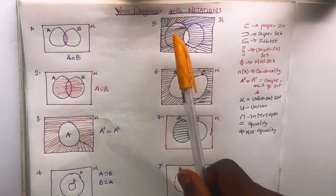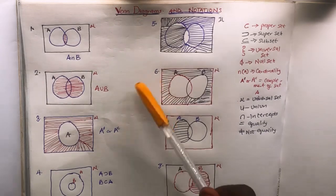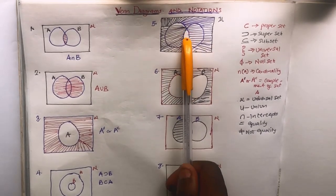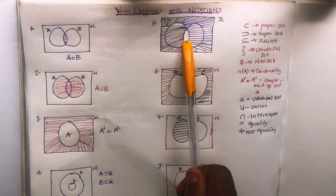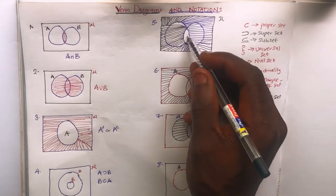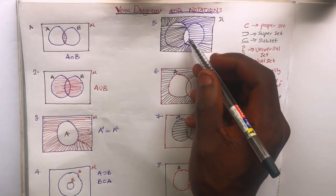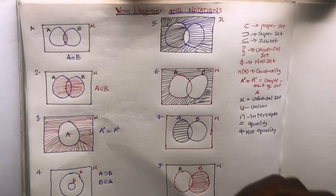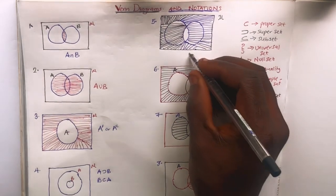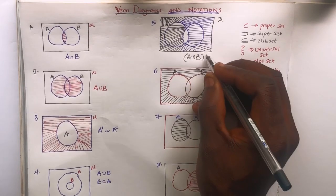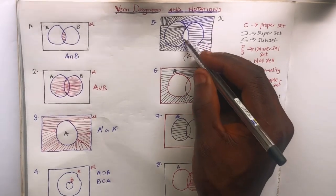The next case: the A part and the B part are shaded but the middle intersection region is left unshaded. What does the shaded portion represent? The shaded portion is A intersection B complement — meaning they are not part of the intersection.